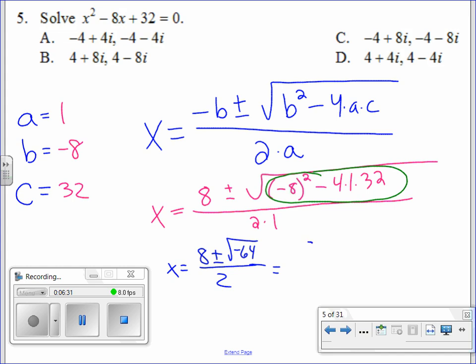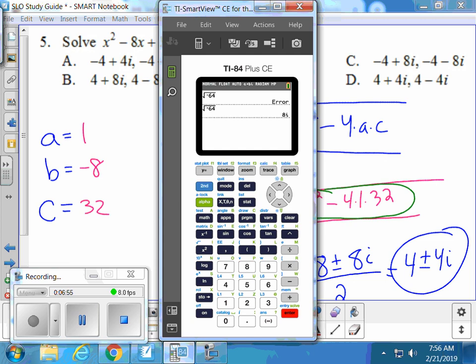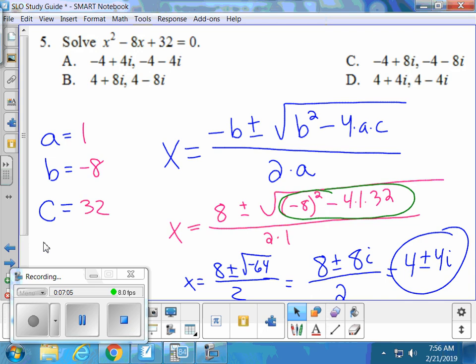The square root of negative 64 is going to be 8i. Calculator will actually do it for you if you're in imaginary mode. 8 divided by 2 equals 4, and 8i divided by 2 equals 4i. If you're getting error when you type in square root of negative 64, you're not in imaginary mode. Go into mode and select A plus Bi. We came back because we forgot to circle our answer. You guys going with B?